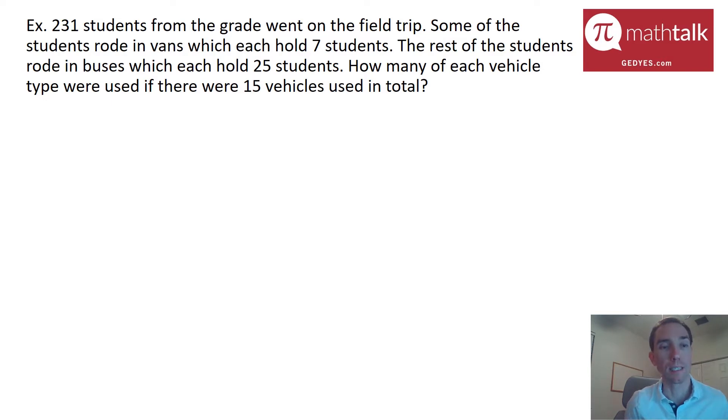So we have an example that says 231 students from the grade went on the field trip. Some of the students rode in vans which each hold 7 students. The rest of the students rode in buses which each hold 25 students. How many of each vehicle type were used if there were 15 vehicles used in total? So there's a whole lot of information in here, several different numbers and different types of equations that can be set up and looking at how to solve for the vehicle types.